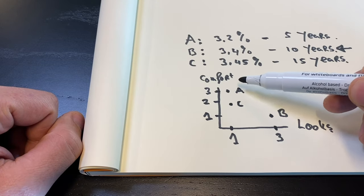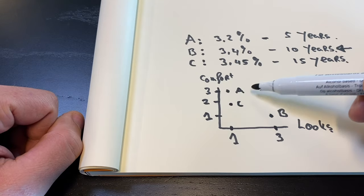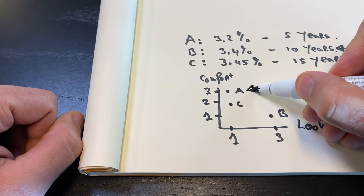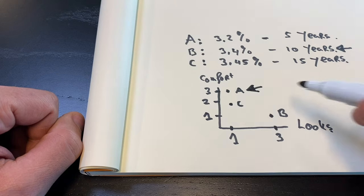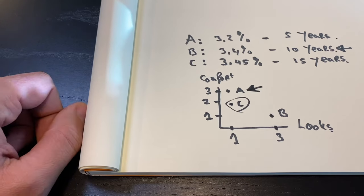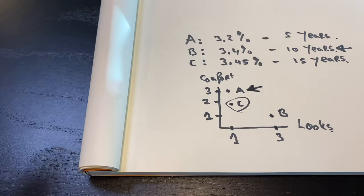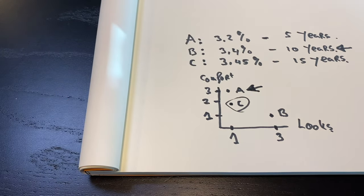By adding alternatives that may not be that interesting by themselves, you can change the decision landscape and thereby influence people into deciding on other options.